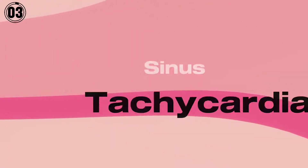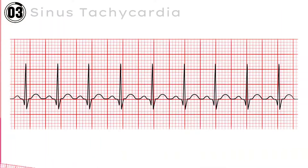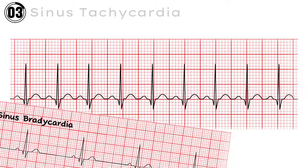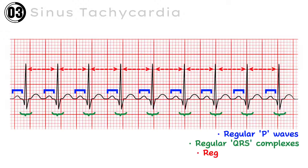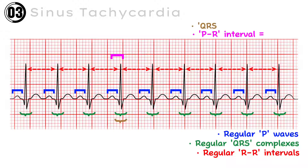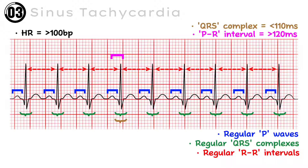ECG number 3: Sinus Tachycardia. Just like sinus bradycardia, sinus tachycardia also follows all the criteria of normal sinus rhythm — like regular P waves, followed by regular QRS complexes, and regular RR intervals — and the PR intervals and QRS complexes do not go beyond normal length limits. But in sinus tachycardia, the heart rate is above 100 beats per minute, which is the only factor that differentiates it from normal sinus rhythm and sinus bradycardia.